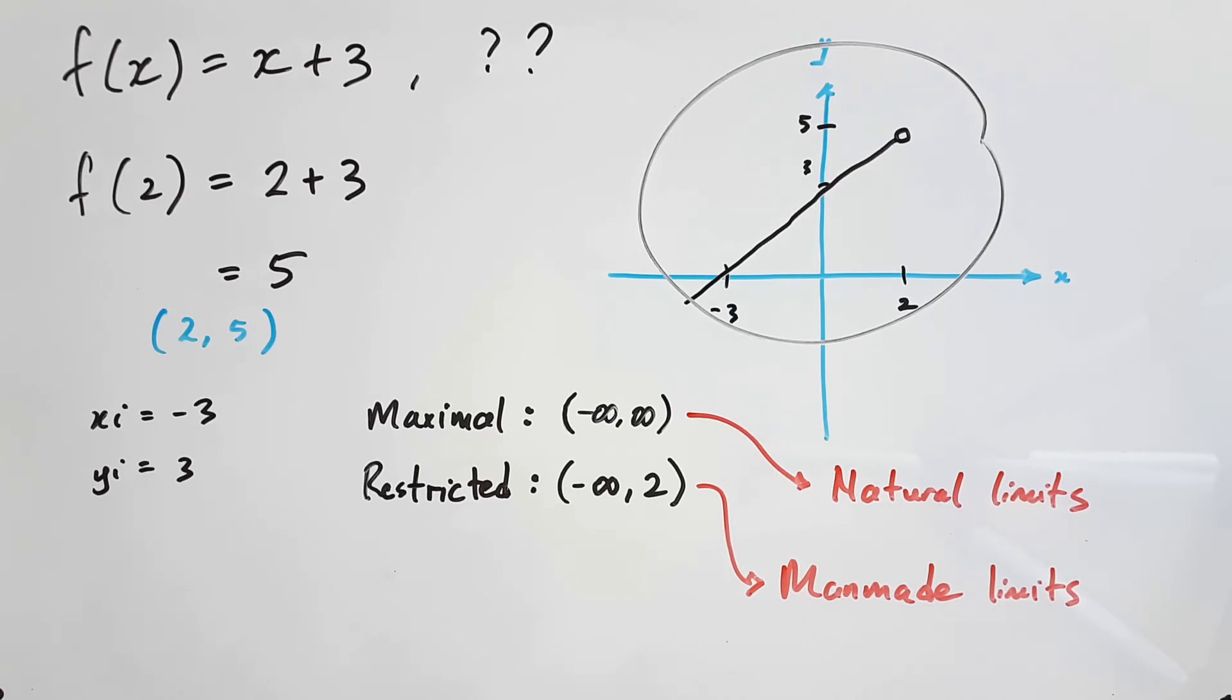Working backwards from there, we would eventually find that the domain is from negative infinity and up to 2, but since the limits were hidden, we would say this is an implied domain, something you had to figure out yourself because it wasn't provided to you. Let's look at this final example to see this in action.